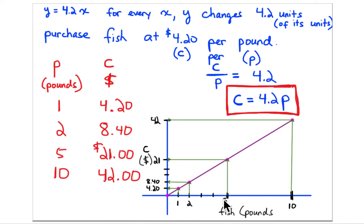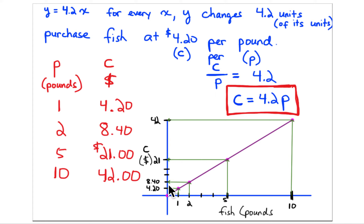For the y-axis — money — you have to get up to $42. Label the axis 'cost in dollars.' Go up as far as you can and label that 42. Divide 42 in half to get 21. Then divide this into five equal parts and label them: $4.20, $8.40, $21, and $42.